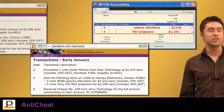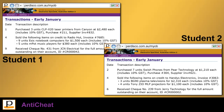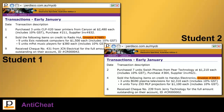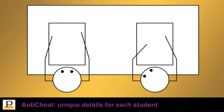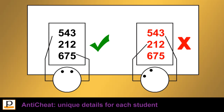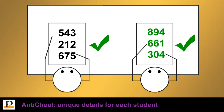Our exclusive anti-cheat functionality ensures that each student's transaction list contains different dates, items, quantities, costs, suppliers, invoice numbers and check numbers, so that their entire practice set is different to that of any other student. Since students are unable to copy each other's work, they're forced to thoroughly practice and understand the skills essential to accounting with MYOB.